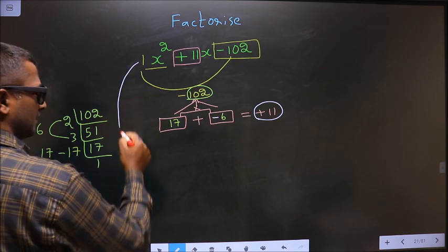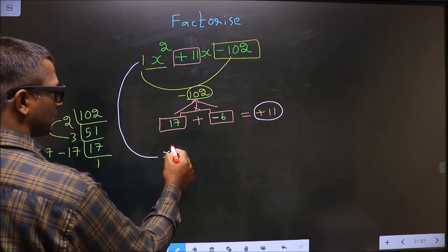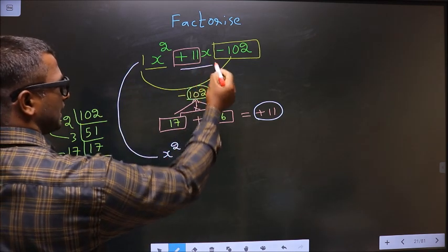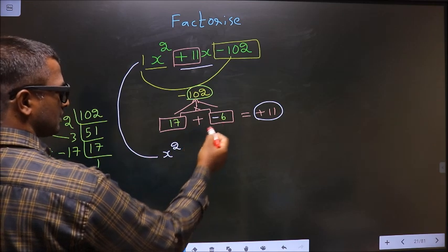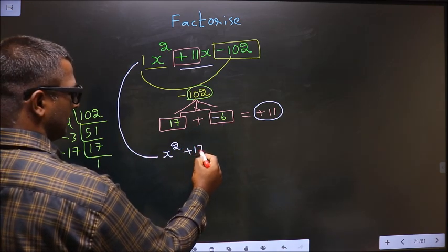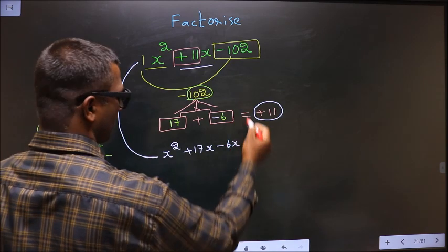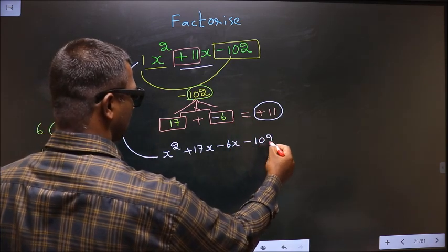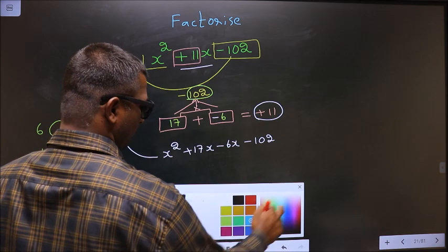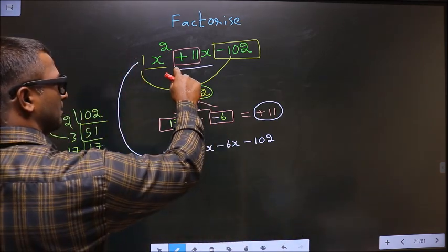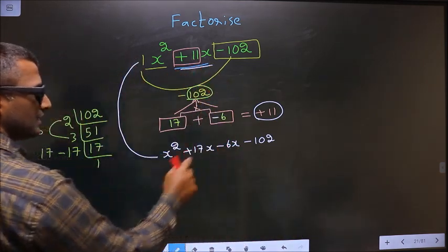Now you change this. In place of 11x, now you write plus 17x minus 6x minus 102. Am I clear? In place of 11x, I have written this.